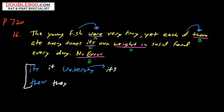Now, so we know it's singular here. Each of them ate many times its own weight. What's the subject here? It's always before the preposition. And each implies one single fish.